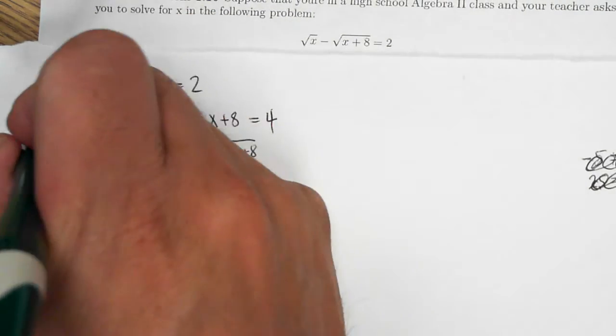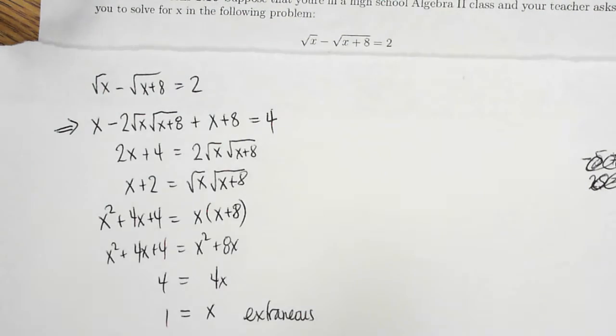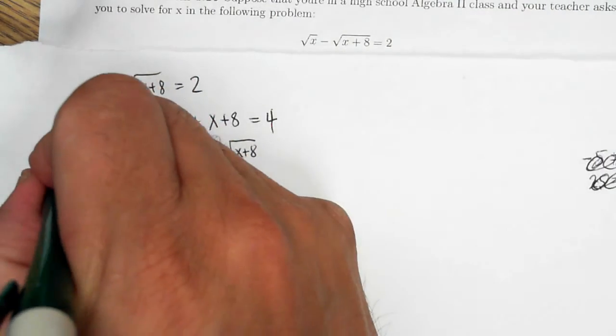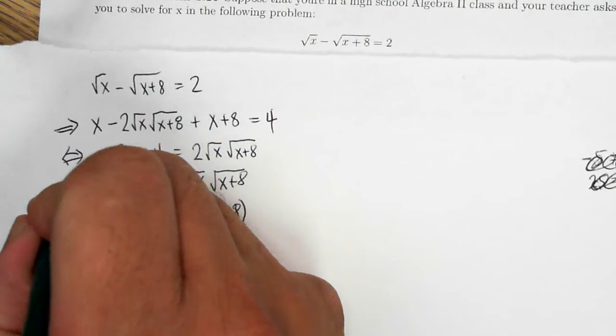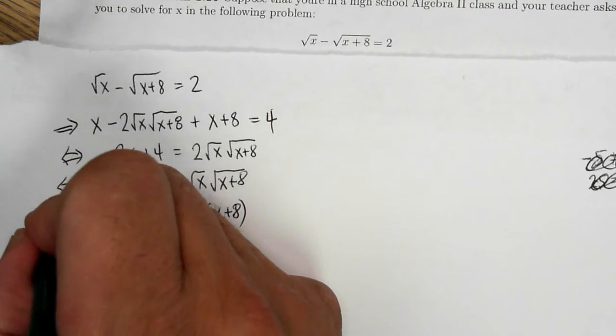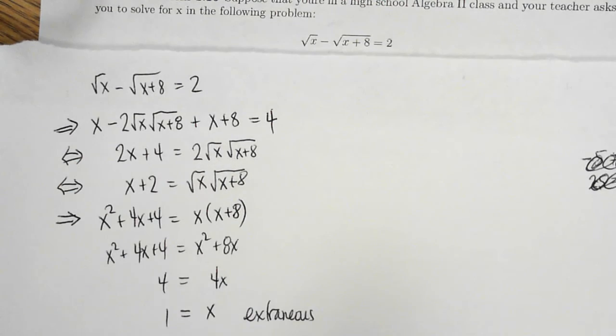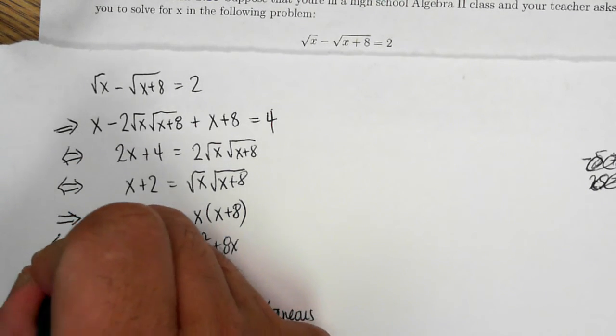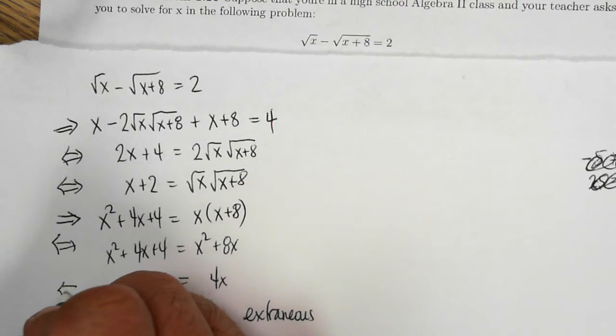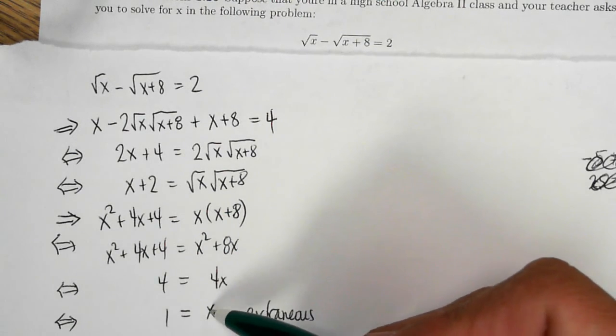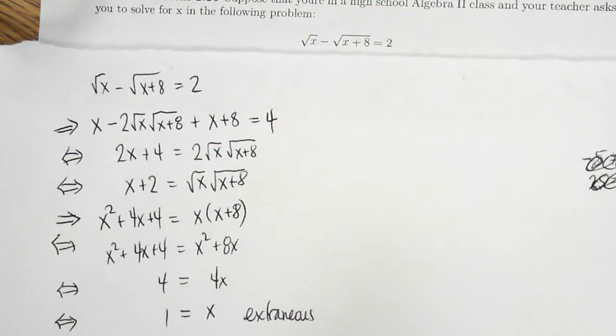So here, that is a one-way implication. This one is an if and only if. Dividing by 2 on both sides, that's fine. But then I had to square both sides a second time. And so the net effect is that the top line implies the bottom line. But I can't start at the bottom line to end up with the top line.